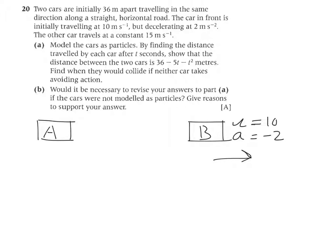What else are they saying? The other car has a constant speed, so U equals 15 for car A. A is 0 because it has a constant speed. They say that the distance between the two initially is 36 meters, so the distance is 36.